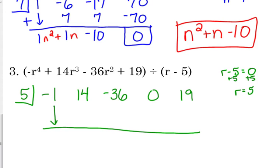It doesn't change the synthetic division, we still do it the same way. Bring down the negative 1. Multiply, gives us negative 5. Add. 14 plus negative 5 is 9. Multiply. 9 times 5 is 45. Add. Negative 36 plus 45.